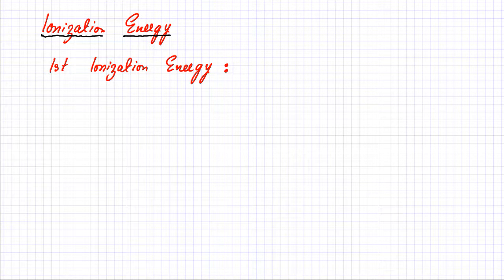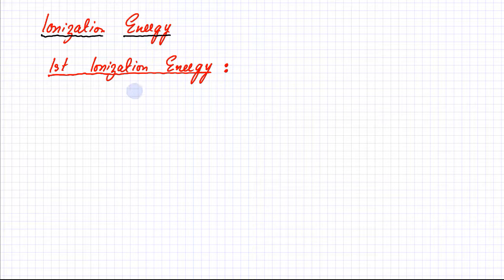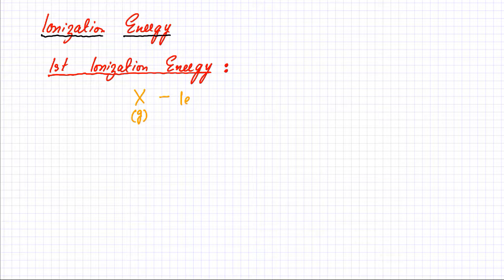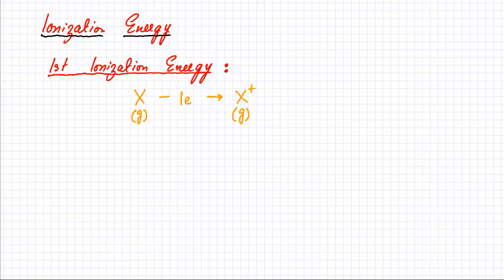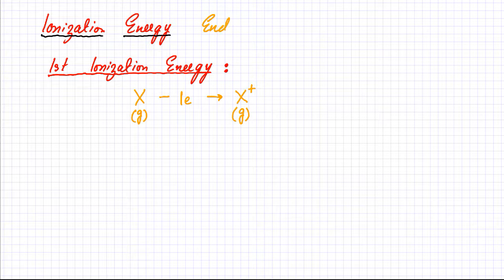The first ionization energy means that you are removing an electron. For example, if you have an element X as a gaseous atom, you remove one electron from that element and it forms a gaseous positive ion. Whenever you try to remove electrons from atoms it's always going to be an endothermic process — ionization energies are all endothermic.